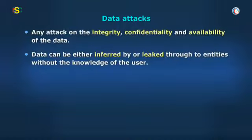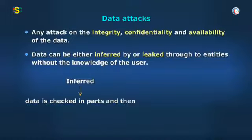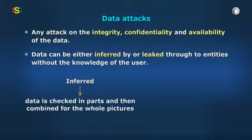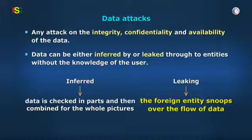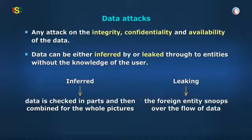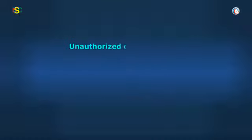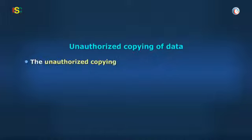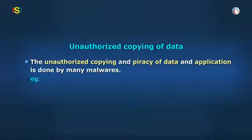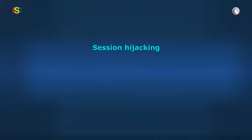The data can be either inferred or leaked to entities without the user's knowledge. By inference, the data is seen by the foreign entity piece by piece to create a whole picture. In leaking, the foreign entity gets access to data through eavesdropping or backdoor entry. Unauthorized copying and piracy of data and applications is also done by many malwares — software piracy is one example.